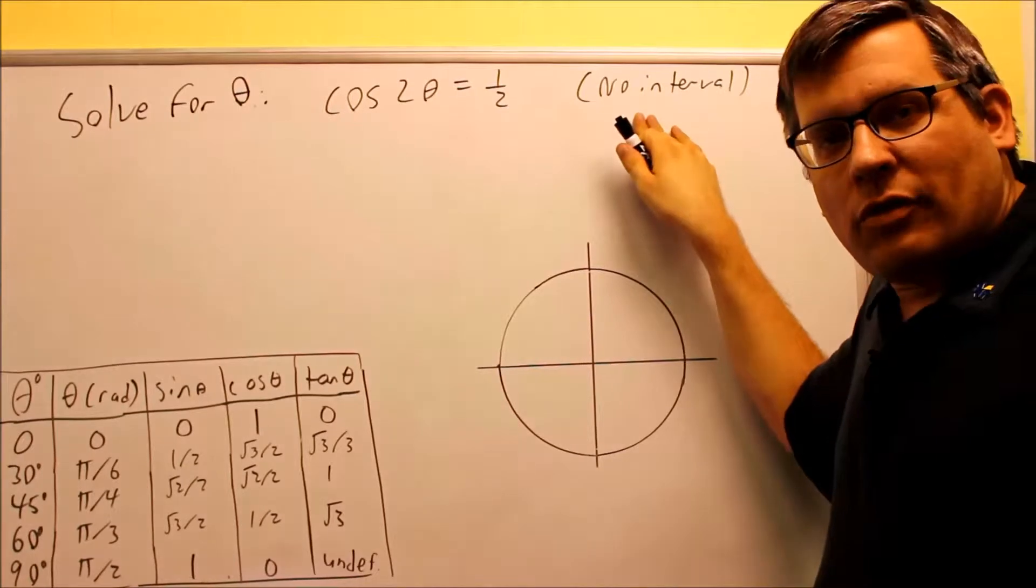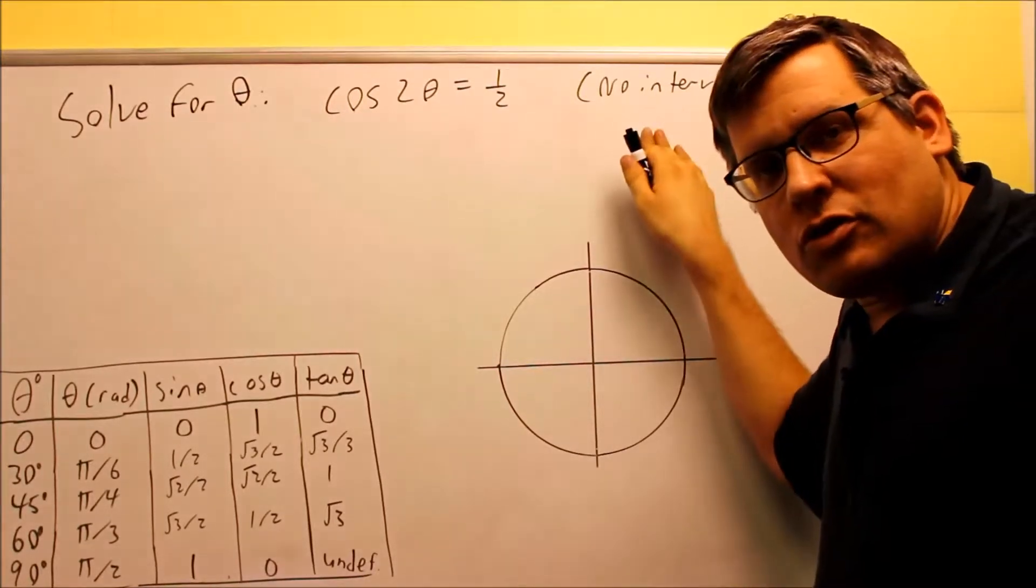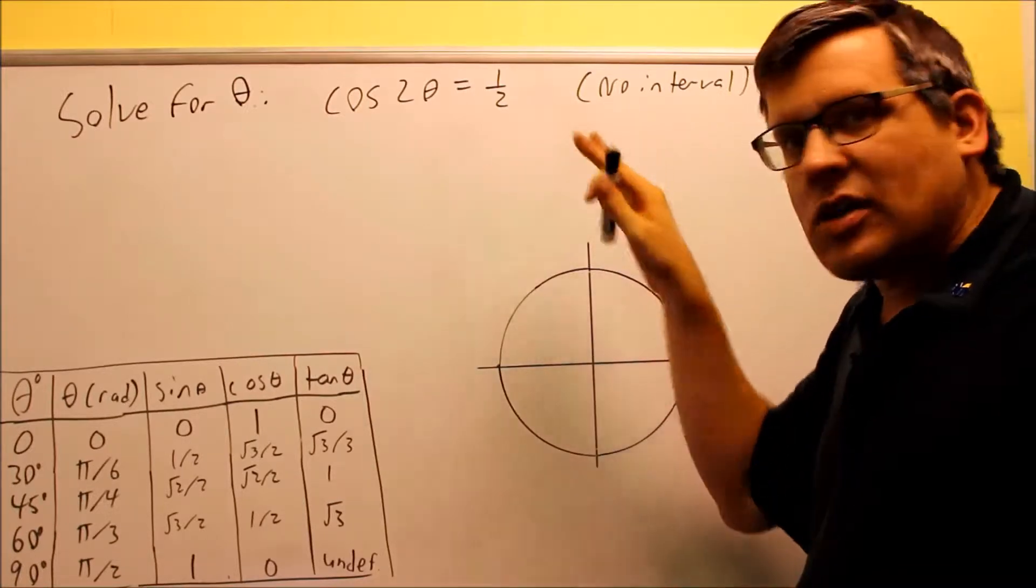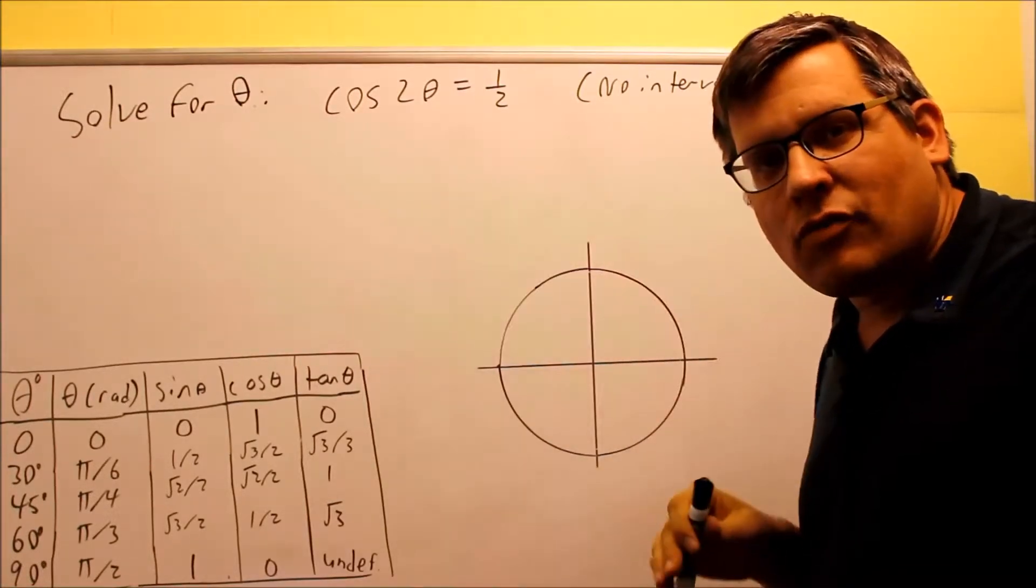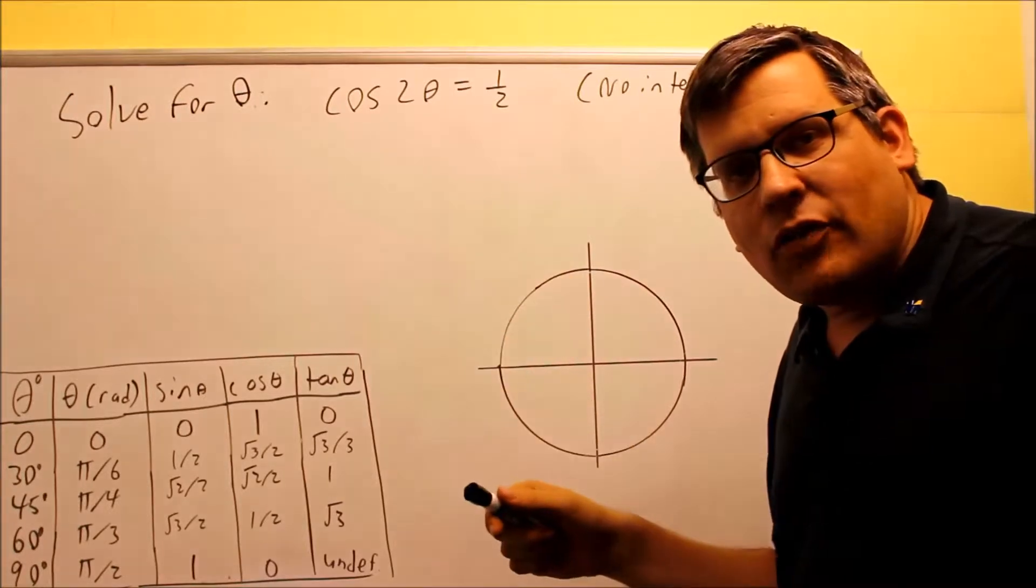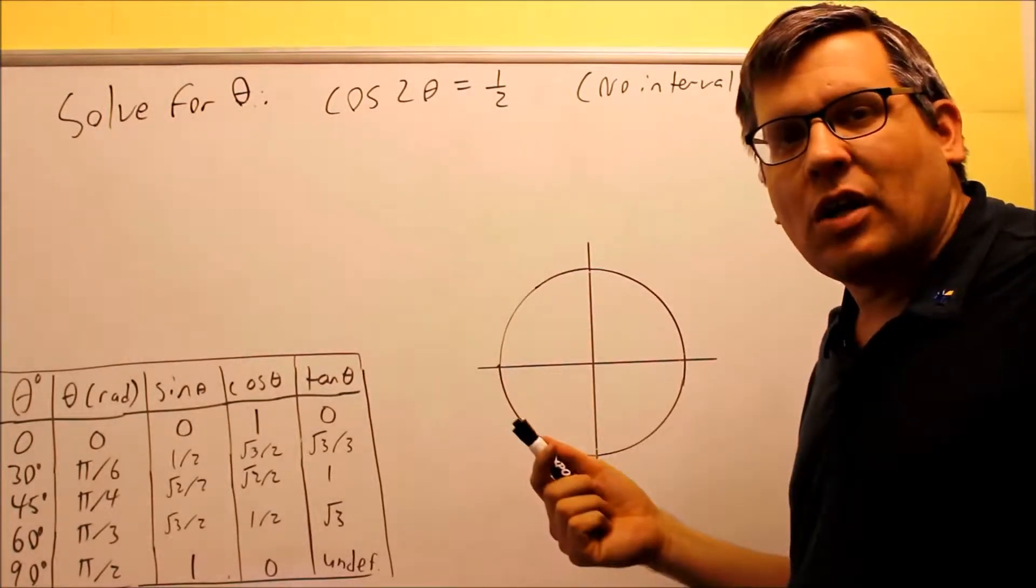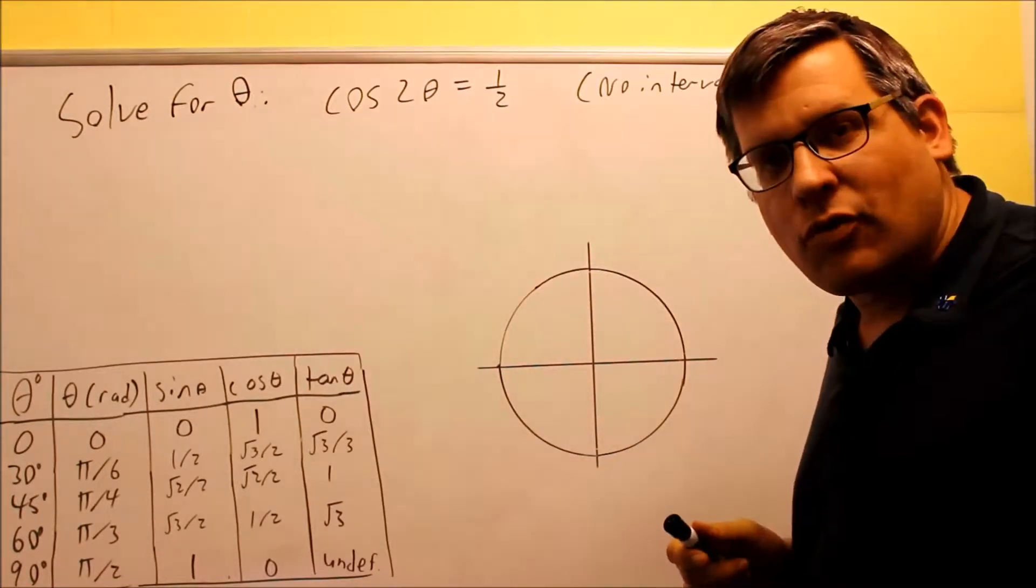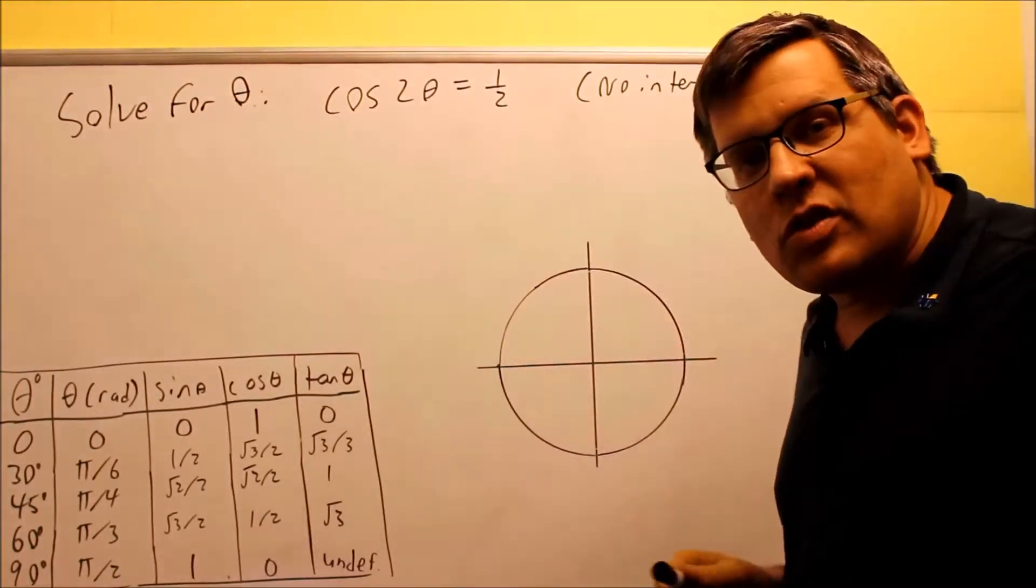This one does not have an interval given to us, so we don't have 0 to 2π or 0 to 360, so in this case our answers will have to involve a k value, either a 2πk if we do it in radians, or a 360k if we want to do it in degrees. So I'm going to do this one in degrees for you, and we have to put k values in this one.